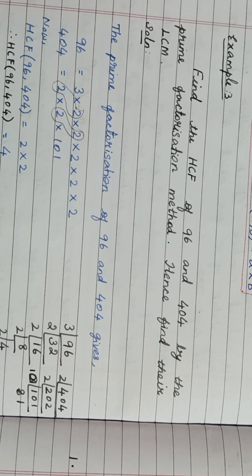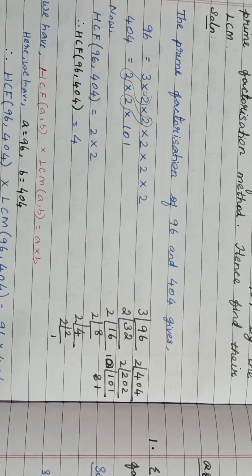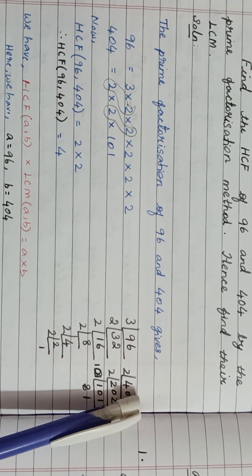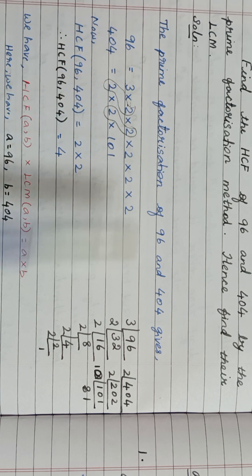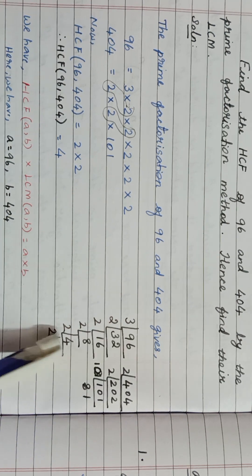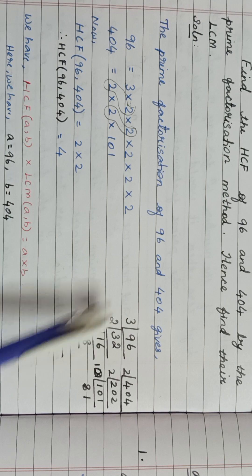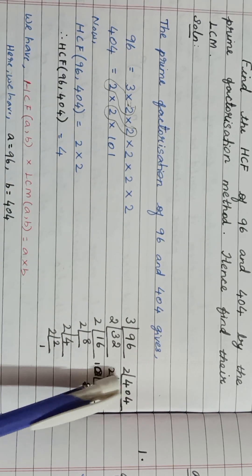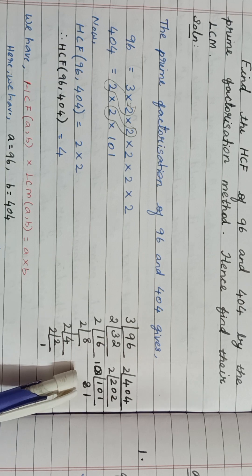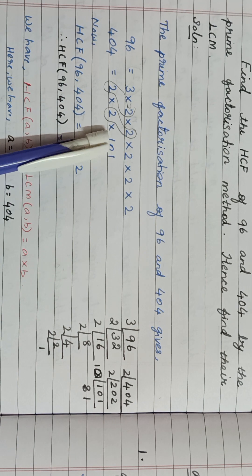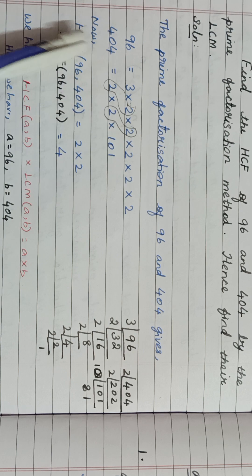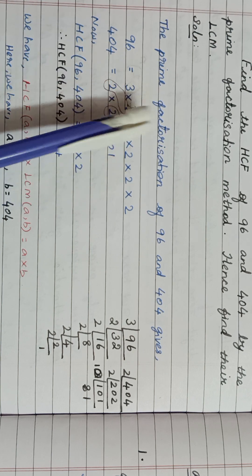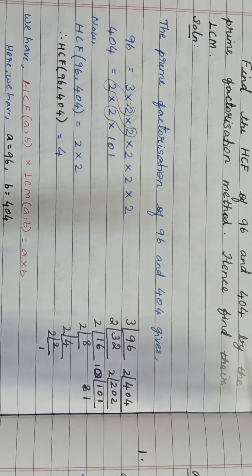Let's see the solution. The prime factorization of 96 and 404 gives: 96 equals — when you prime factorize 96 you will get this. 404 — when you prime factorize it you will get this. Now from this you write the HCF of these two numbers, that is you see what number is common in both of the given numbers.